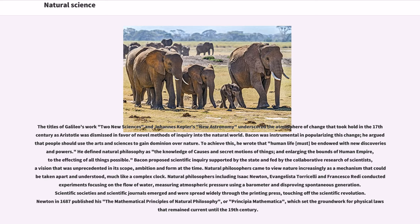Bacon was instrumental in popularizing this change. He argued that people should use the arts and sciences to gain dominion over nature. To achieve this, he wrote that human life must be endowed with new discoveries and powers. He defined natural philosophy as the knowledge of causes and secret motions of things, and enlarging the bounds of human empire, to the effecting of all things possible. Bacon proposed scientific inquiries supported by the state and fed by the collaborative research of scientists, a vision that was unprecedented in its scope, ambition and form at the time. Natural philosophers came to view nature increasingly as a mechanism that could be taken apart and understood, much like a complex clock.